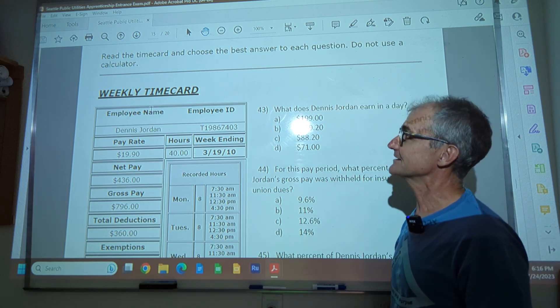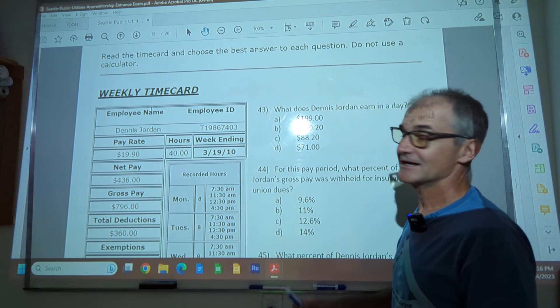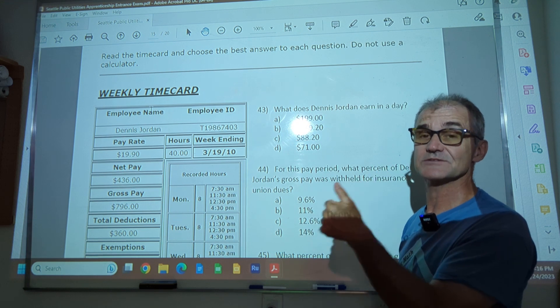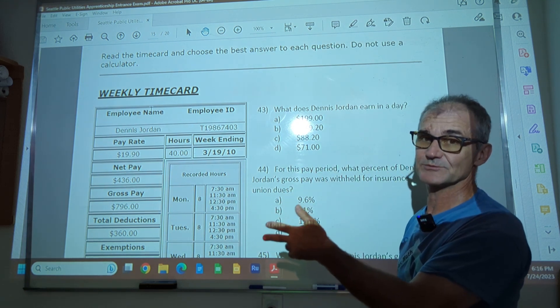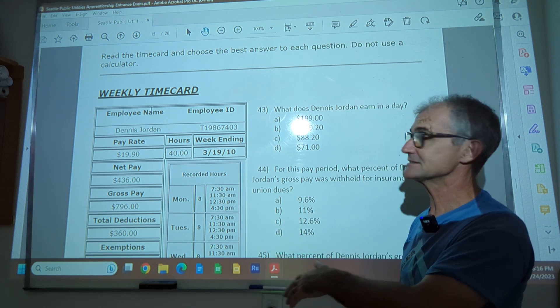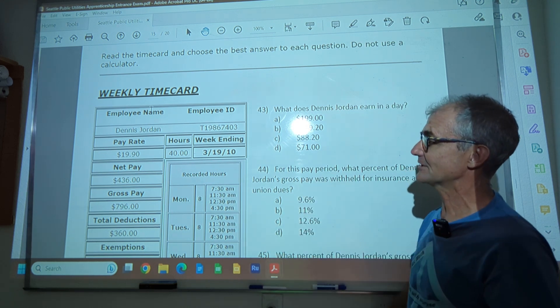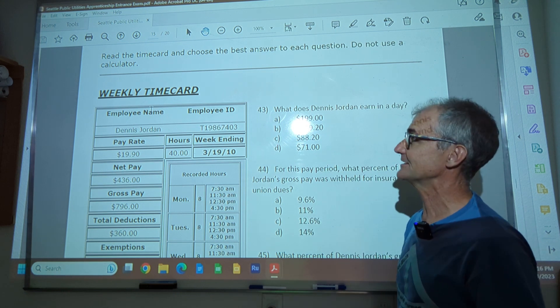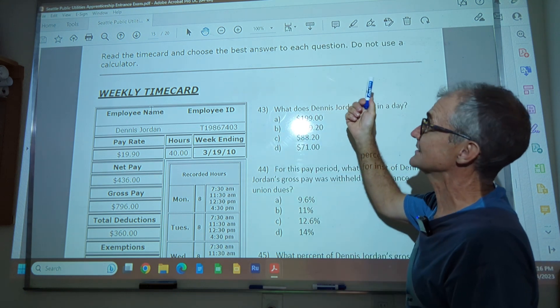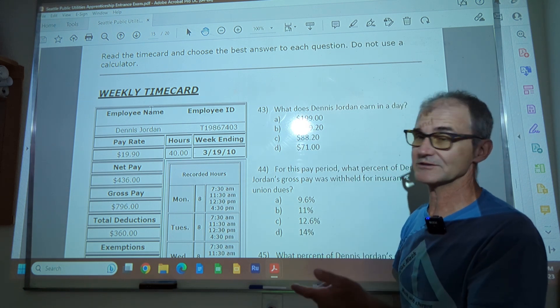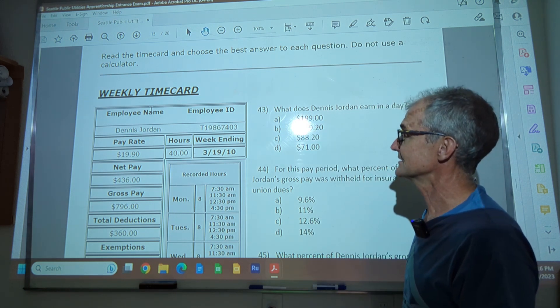Okay. Here's another set of word problems right here. Again, we've got a three-step process. What is it you want? What is it that you have? And then look at the answers because they're multiple choice. See if you can eliminate ones that don't make sense. Go ahead and pause the video. I do this problem before I do it, then unpause and watch how I do it. Read the time card and choose the best answer to each question. Do not use a calculator. So, you know, they're going to be pretty quick computations. Okay.